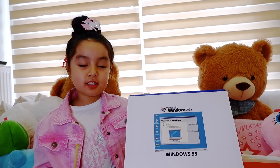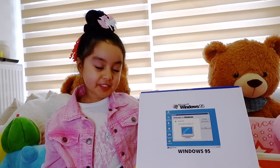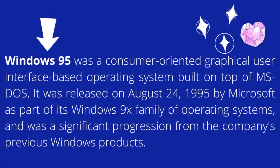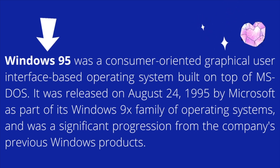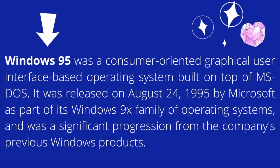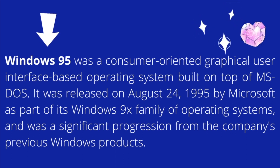The next version is Windows 95. It was a consumer-oriented graphical user interface-based operating system built on top of MS-DOS. It was released on August 24, 1995 by Microsoft as part of its Windows 9X family of operating systems. It was a significant progression from the company's previous Windows products.